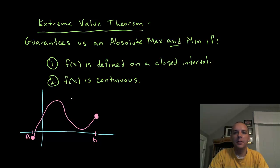The extreme value theorem is a theorem that will guarantee us an absolute max or min for a function if a few certain conditions happen to be met.